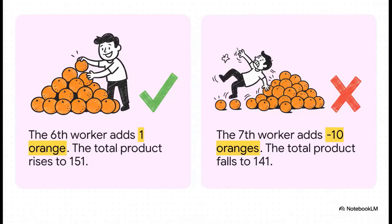This side-by-side comparison makes the tipping point crystal clear. The sixth worker, even though they only added one single orange, still made a positive contribution. The total went up. But the seventh worker's contribution was negative. They actively reduced the total output. That right there is the stopping point.